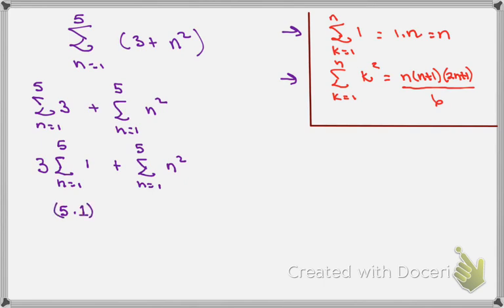And then we've got a 3 there already, so that's there, plus the summation n equals 1 to 5 of n squared.